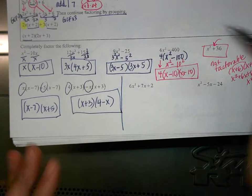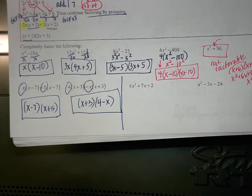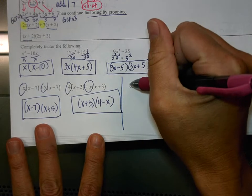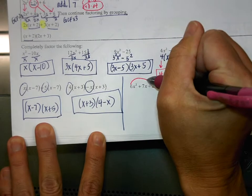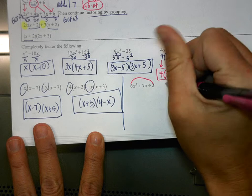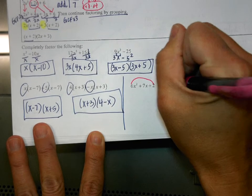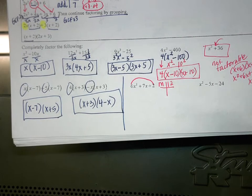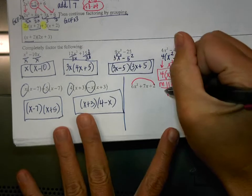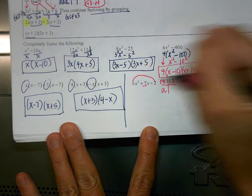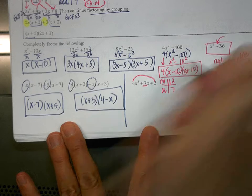When you have three terms, we're going to end up changing it into four terms and factor by grouping. We always multiply the first coefficient to the last. Six times two is 12, so my multiplication number is 12. My adding number is seven, which comes from there.